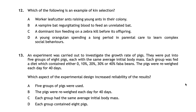Question twelve asks which is an example of kin selection: A — worker leafcutter ants raising young ants in their colony; B — a vampire bat regurgitating blood to feed an unrelated bat; C — a dominant lion feeding on a zebra before its offspring; D — a young orangutan spending time in parental care. The correct answer is A. Worker ants are raising related but not their own offspring, which is kin selection. Option B is not kin selection because the bat being fed is unrelated — kin selection applies to related individuals.